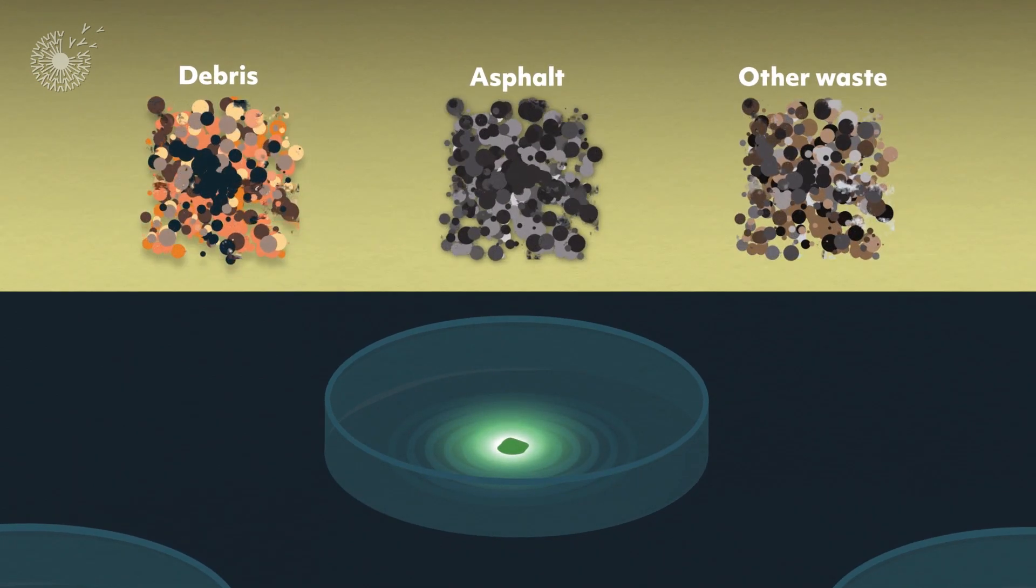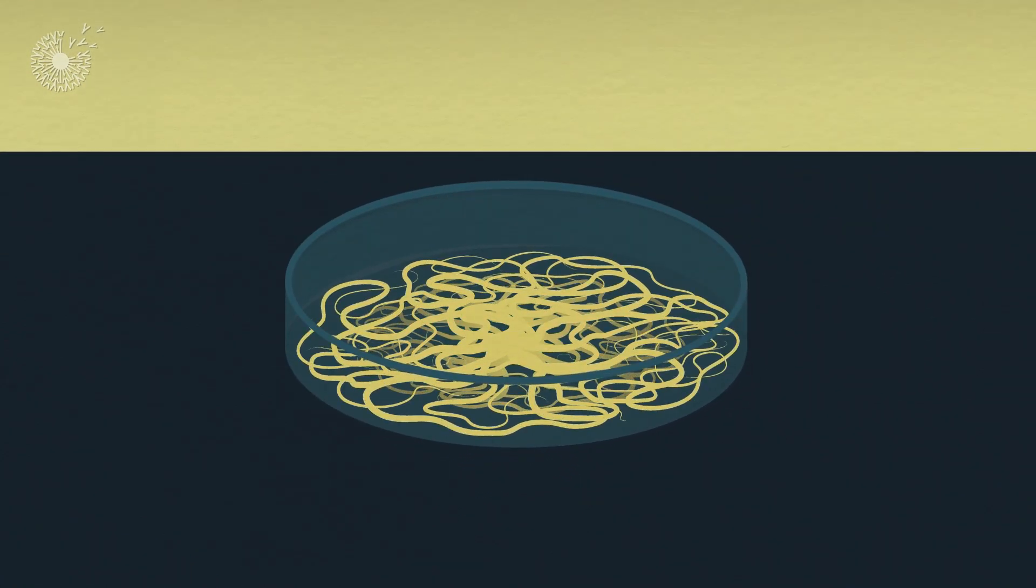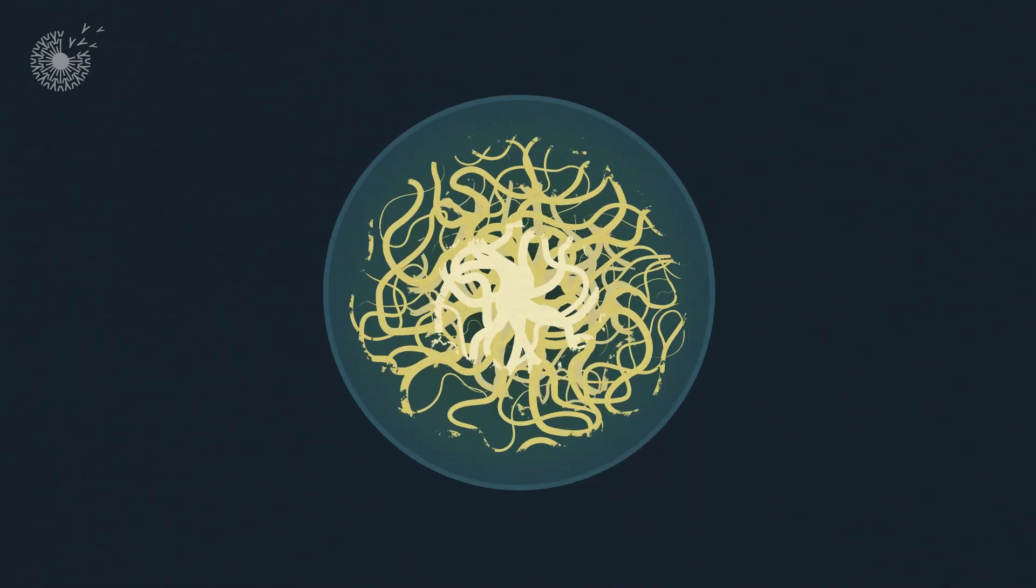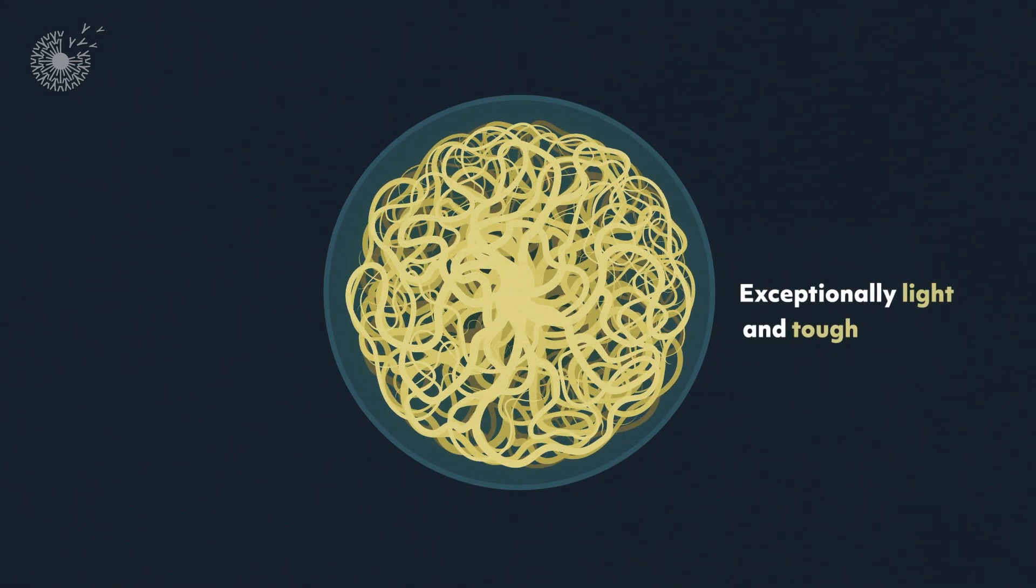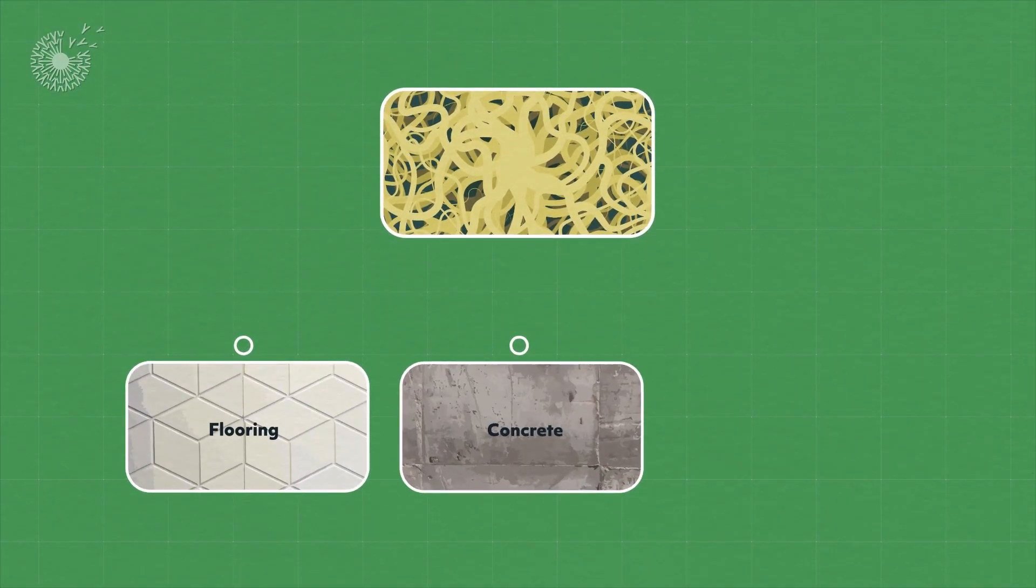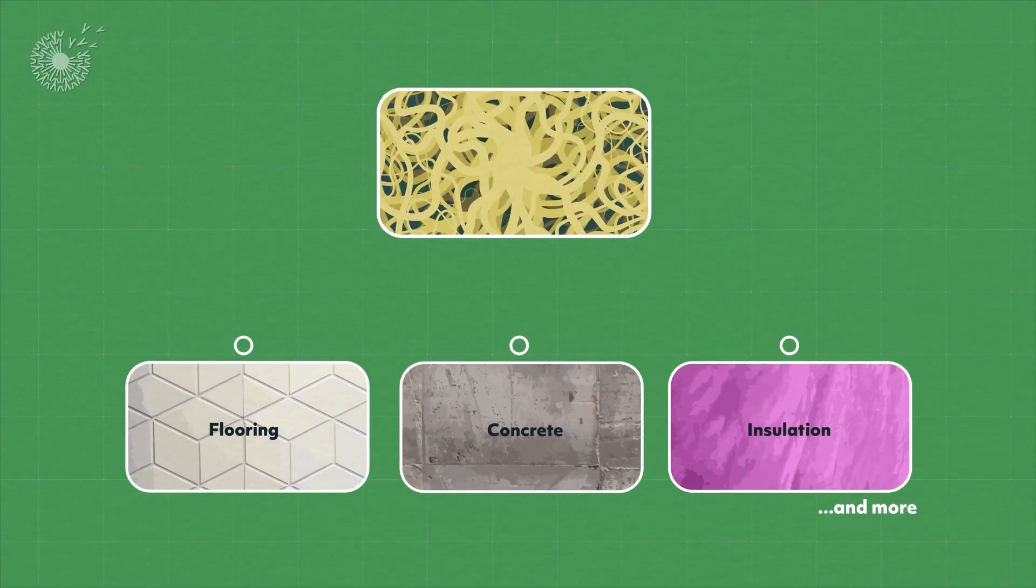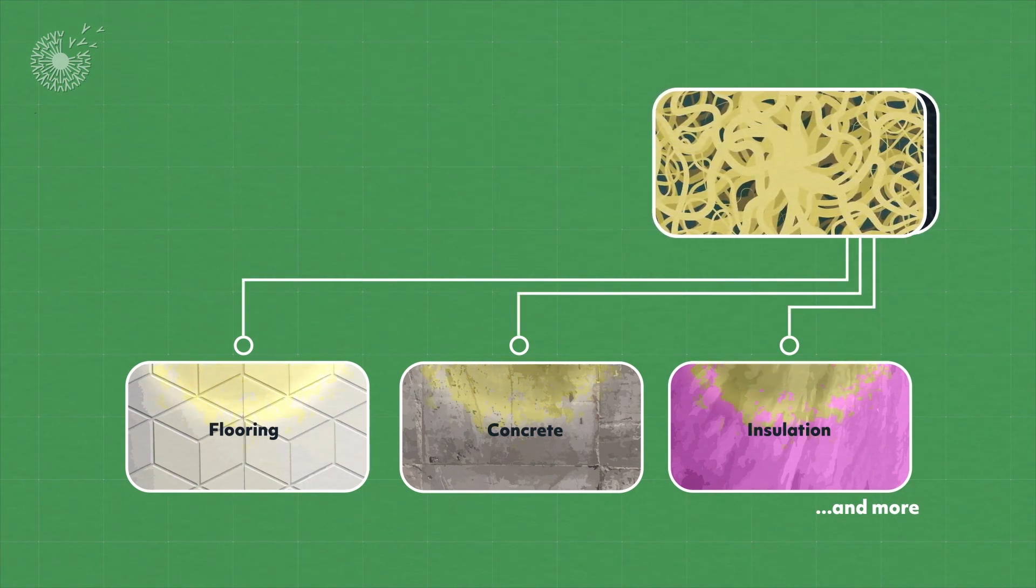They rapidly convert them into harmless materials they weave into their own growing root-like structures. The resulting mass that the fungi produce is exceptionally light and tough and can be used in the production of flooring, concrete, insulation products, and more, replacing petrochemical polymers currently in use.